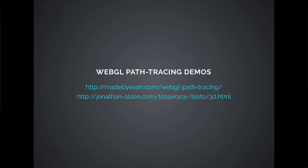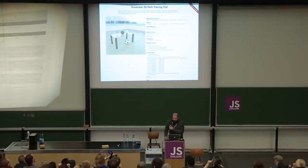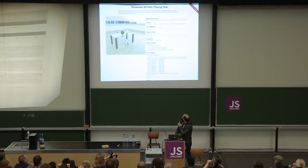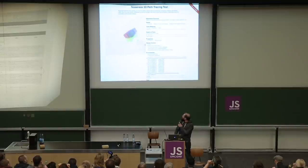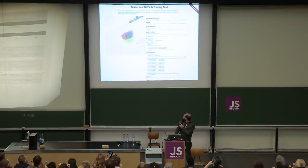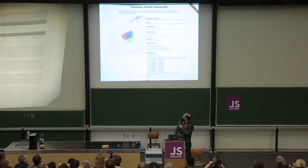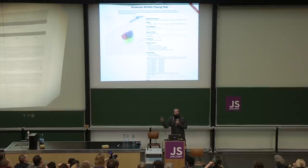Here is an example: someone actually built a real path tracing renderer in WebGL. We can change the scene, move around with the camera, and you can see some effects that only path tracing can do — like shadows in between objects or refractions within a glass ball. We can even adjust camera parameters like the focal length or the aperture size, so it's a really good simulation of how light really behaves.